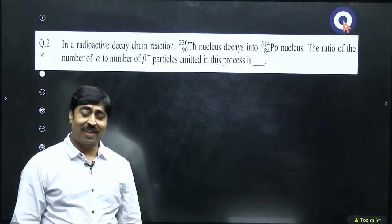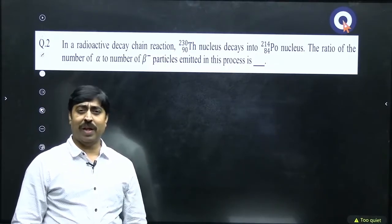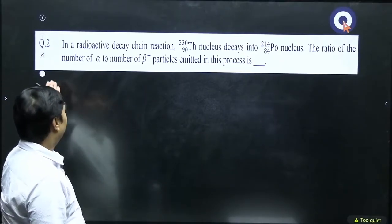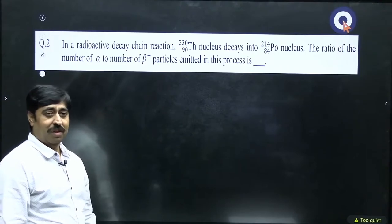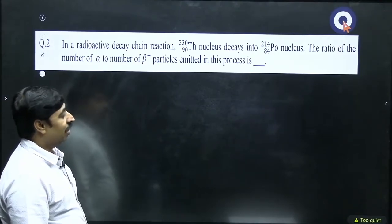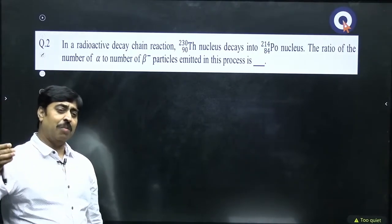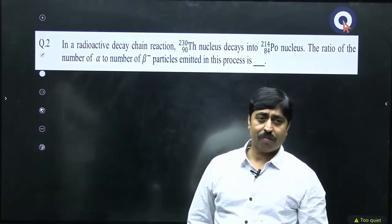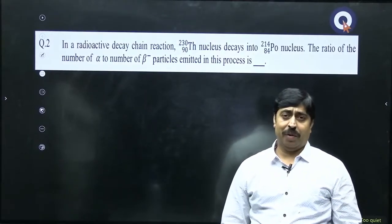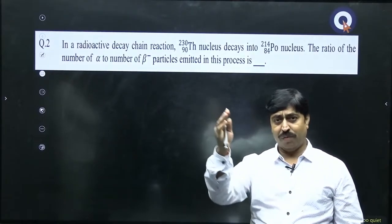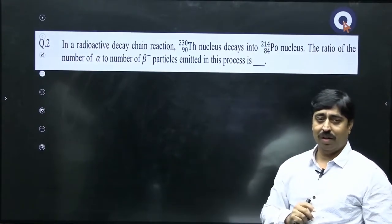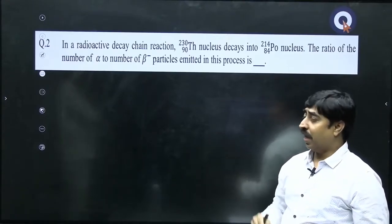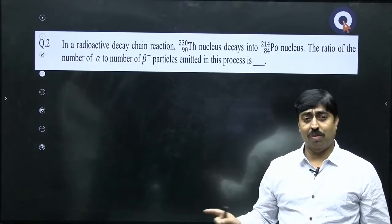Now look at this question — isn't it very easy? Isn't it something you have solved many times during preparation? In a radioactive decay chain, Thorium-230 decays in multiple steps and ultimately converts into Polonium-214. How many alpha and beta particles are emitted? What is the ratio of alpha to beta particles emitted during the entire process?